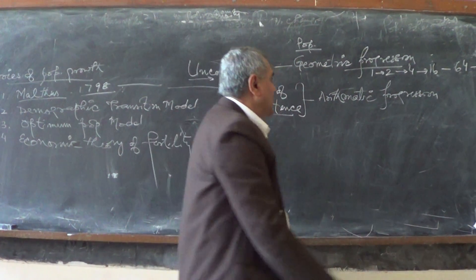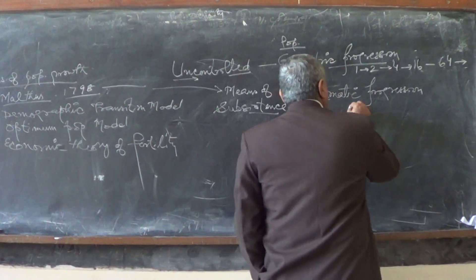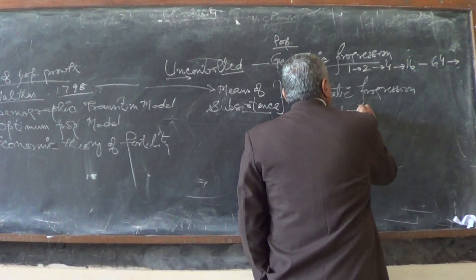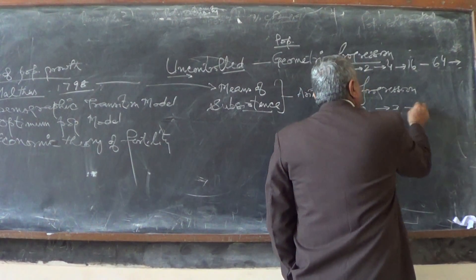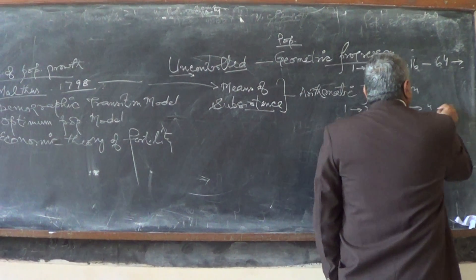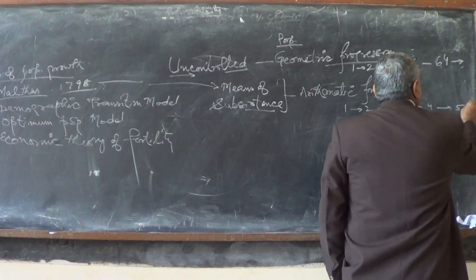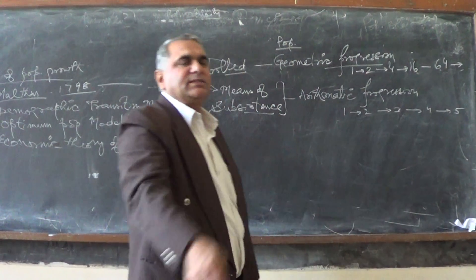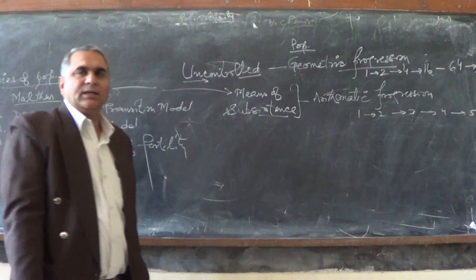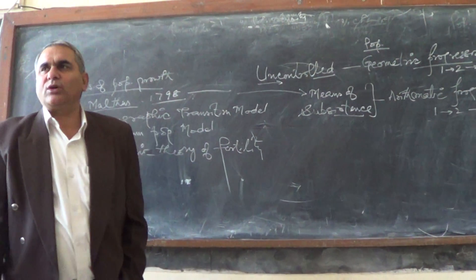But arithmetic progression means: 1, 2, 3, 4, 5 — it increases like this. That is the progression of food supply.